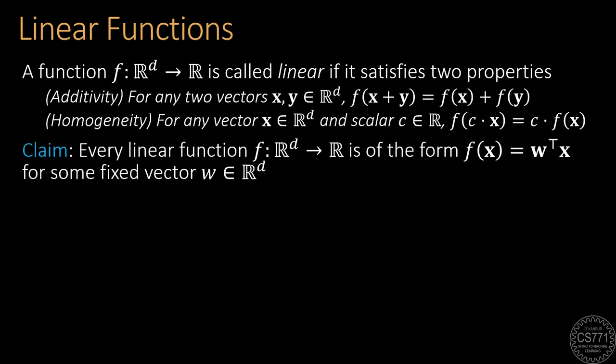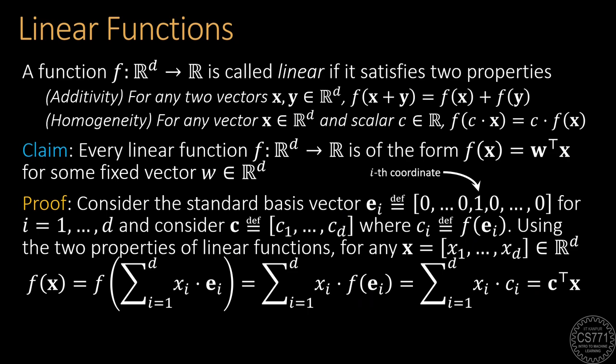It turns out that real-valued functions that are linear can only be of a very specific type, namely they are always the dot product of the input with some fixed vector. Proving this is fairly simple. We consider the standard basis vectors, where the i-th standard basis vector has a 1 at the i-th coordinate and zeros everywhere else. We look at the values that our function takes on these standard basis vectors and arrange these values in a vector. We then exploit the fact that every vector can be written as a weighted combination of the standard basis vectors, which allows us to apply the additivity and homogeneity properties of the linear function.